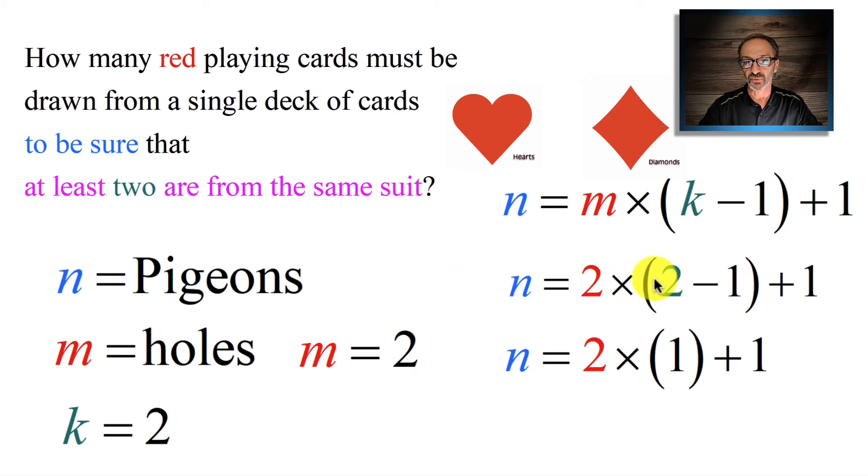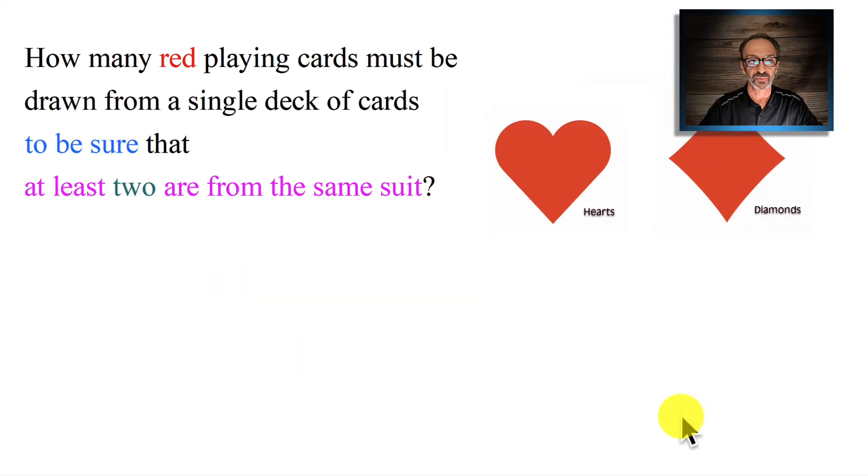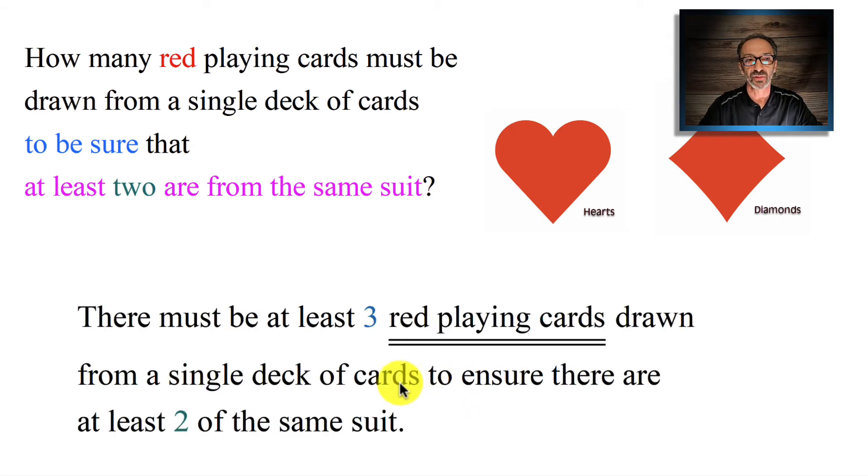In order of operations, we need to do what's inside parentheses first, which is 1. We take care of the multiplication, then finally we add 1. That's 2 times 1, which is 2, plus 1, which is 3. So you need 3. Three cards will do. The question says: How many red playing cards must be drawn from a single deck of cards to be sure at least 2 are from the same suit? And the answer is: There must be at least 3 playing cards drawn from a single deck of cards to ensure there are at least 2 of the same suit.